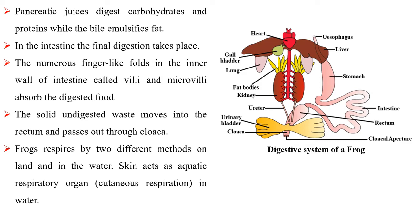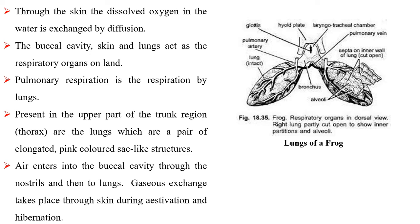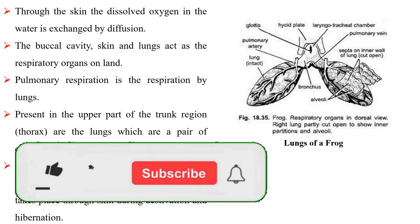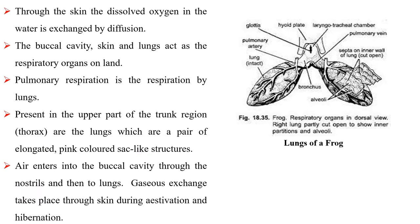The frog respires by two different methods on land and in water. Skin acts as the aquatic respiratory organ in water; the dissolved oxygen in the water is exchanged by diffusion through the skin. The buccal cavity, skin and lungs act as the respiratory organs on land. Pulmonary respiration is the respiration by lungs. The lungs are a pair of elongated pink-colored sac-like structures present in the upper part of the trunk region. Air enters into the buccal cavity through the nostrils and then to the lungs. Gaseous exchange takes place through skin during aestivation and hibernation.